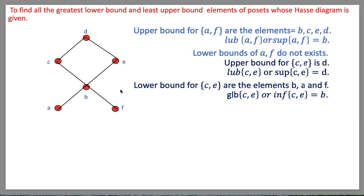Now we will find the greatest lower bound and least upper bound of elements from posets whose Hasse diagram is given. The least upper bound: suppose P together with the relation less than or equal to is a poset, and A is a subset. An element x belonging to P is said to be the least upper bound if x is an upper bound of A and x is less than or equal to y for all upper bounds y of A. The least upper bound is also unique.